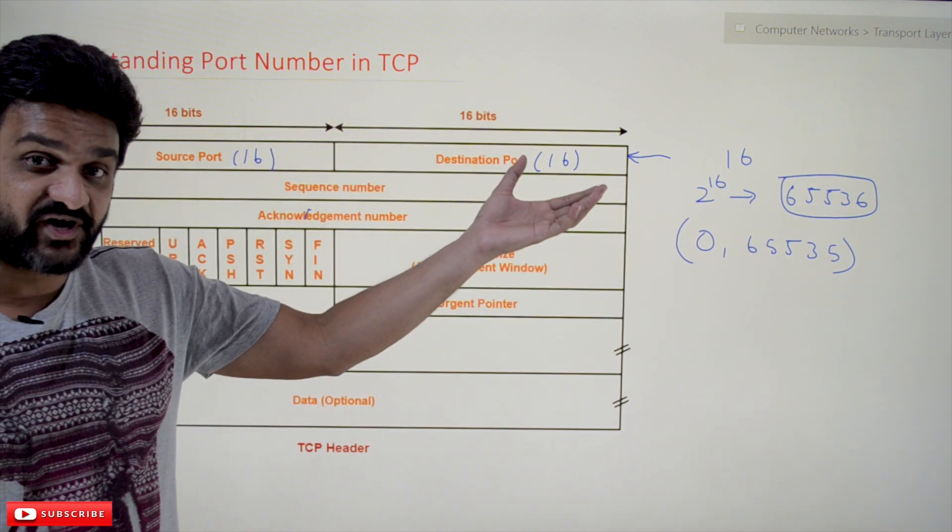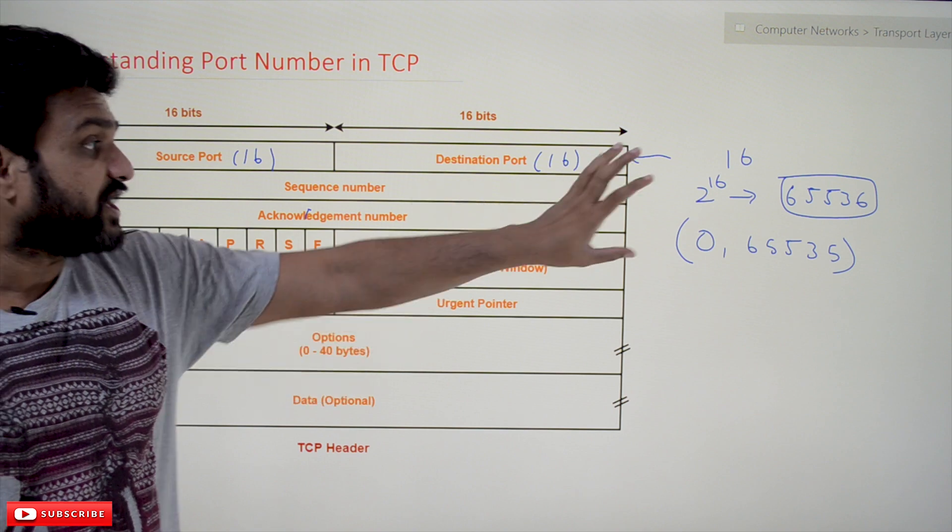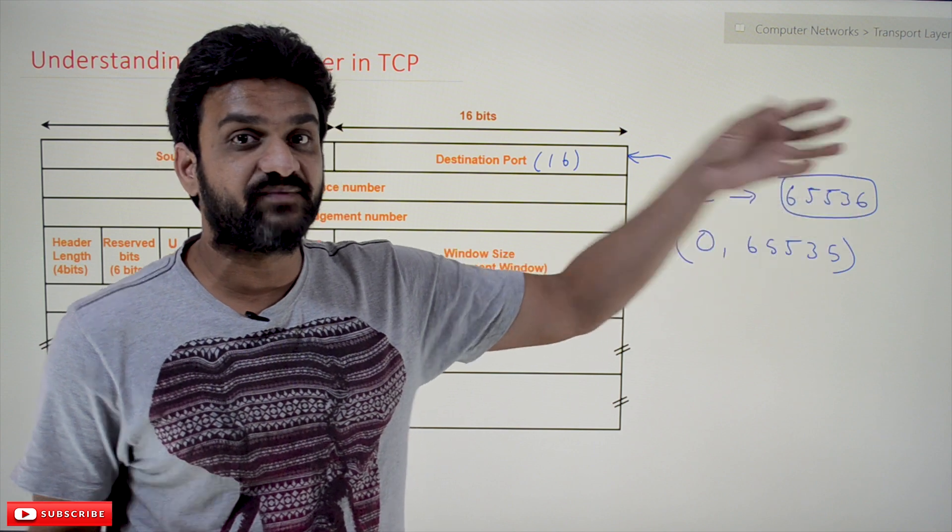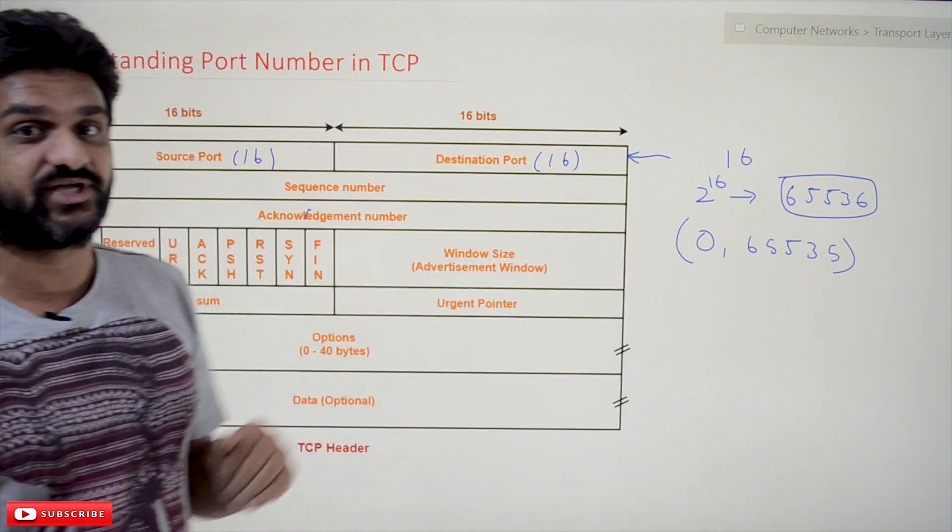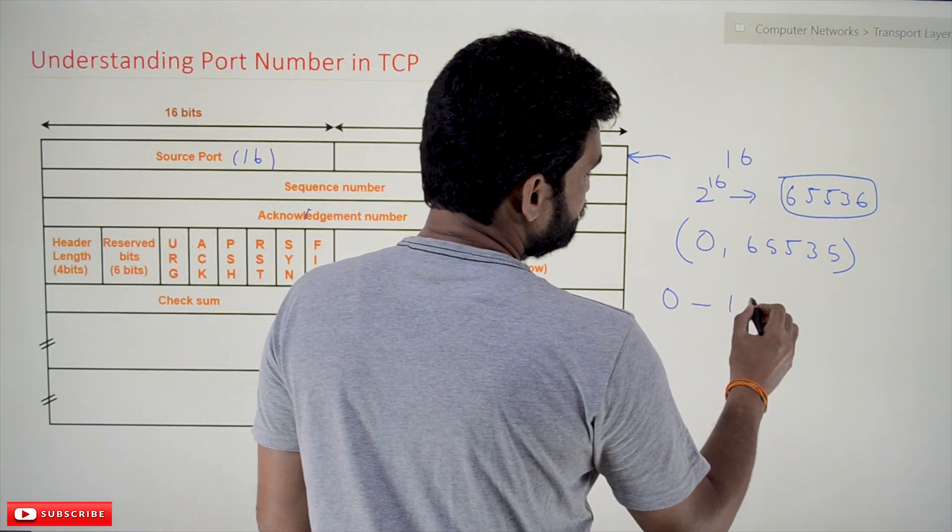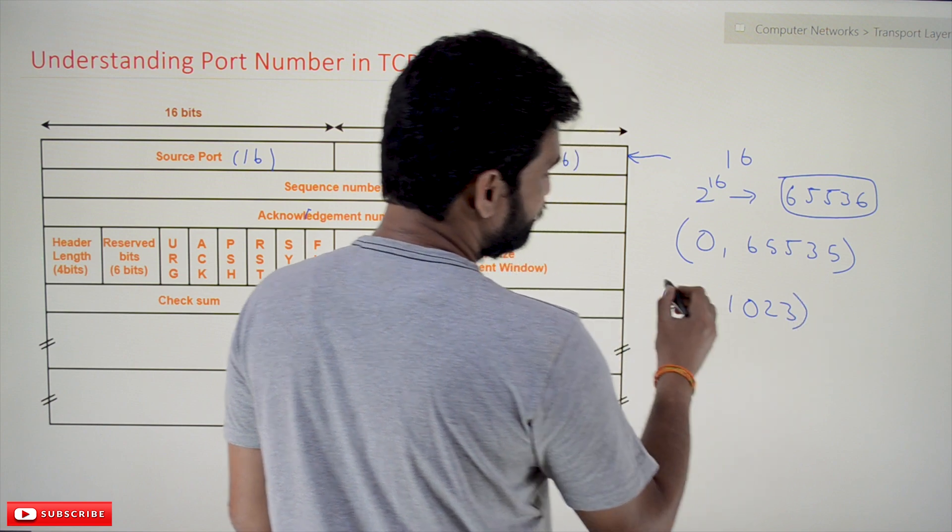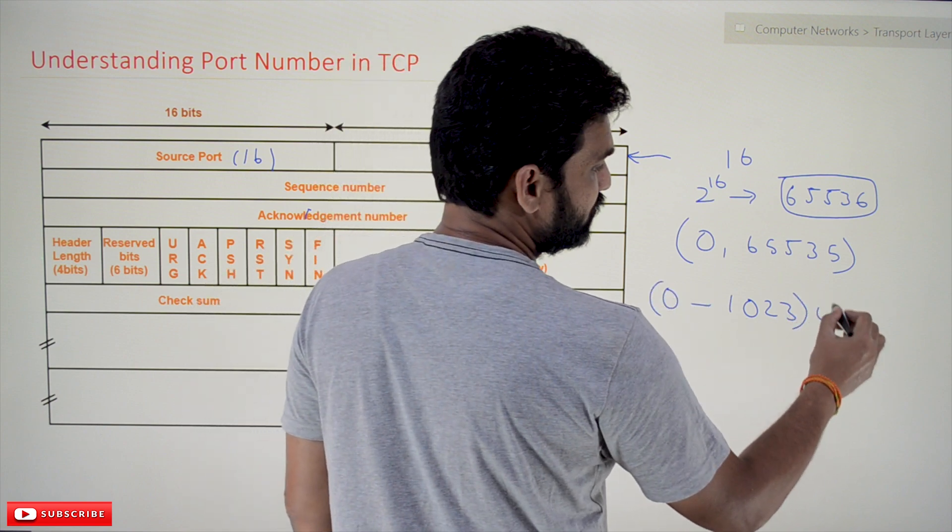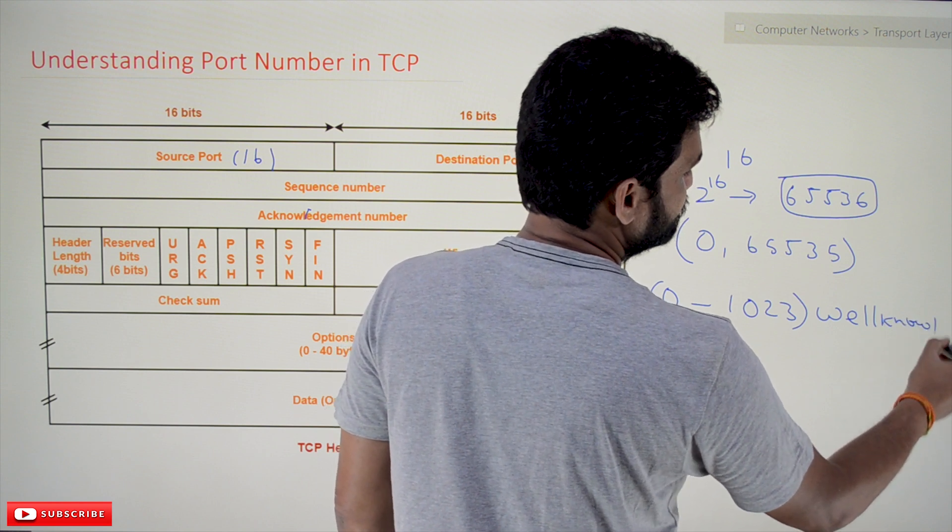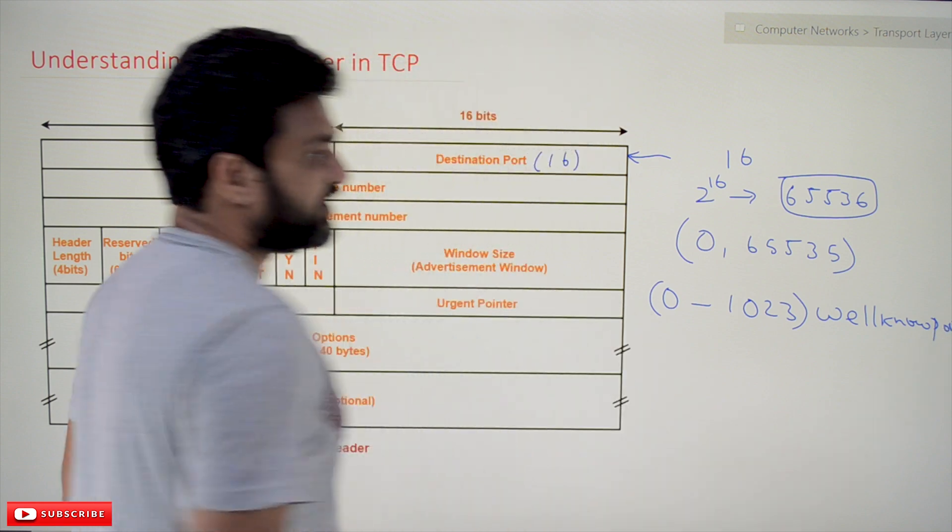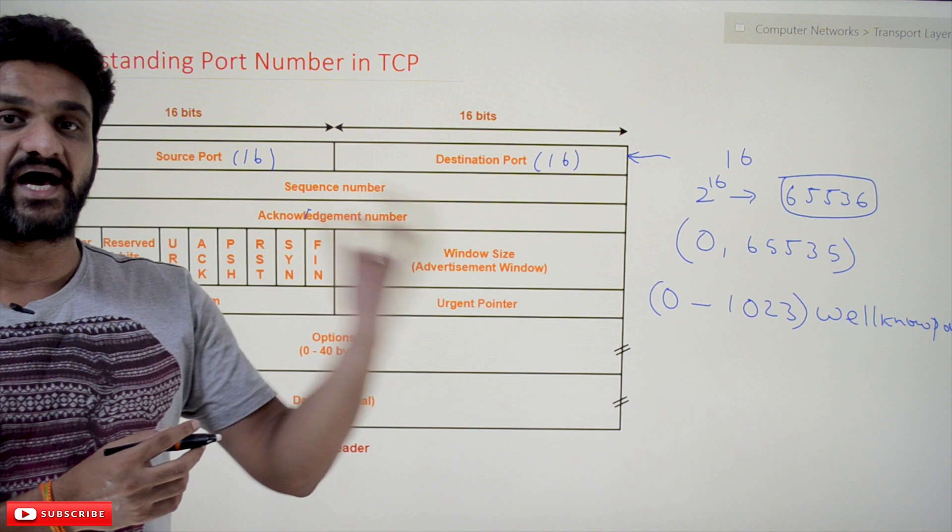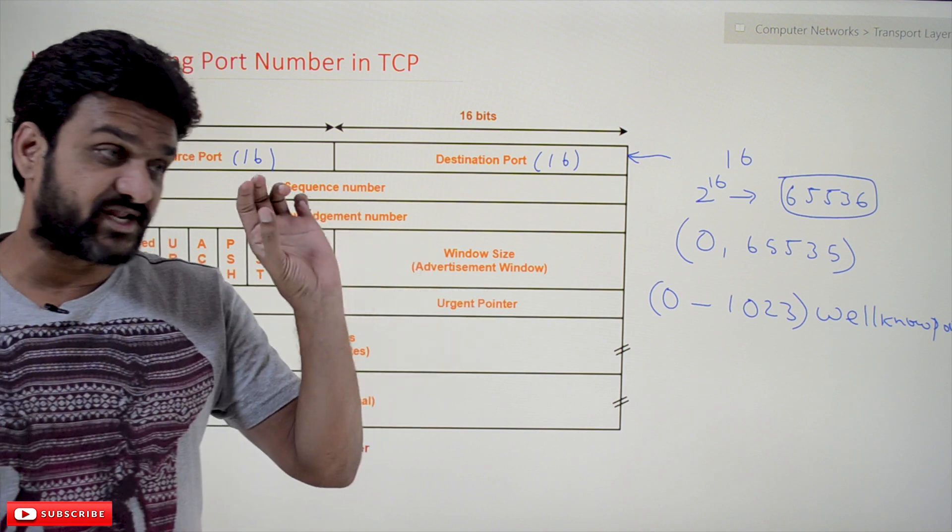The entire range of 65536 port numbers are divided into three groups. The first group is from 0 to 1023. This range of numbers are used for well-known ports. These are well-known port numbers for regularly used protocols like HTTP, SMTP, and RTP.